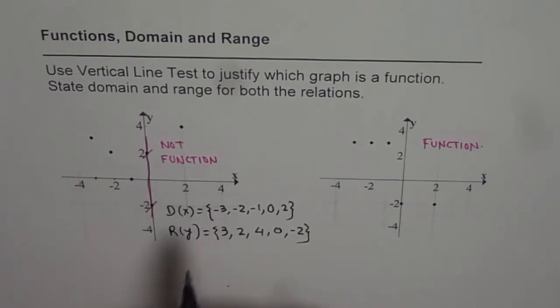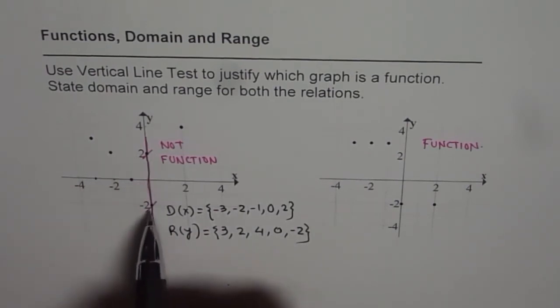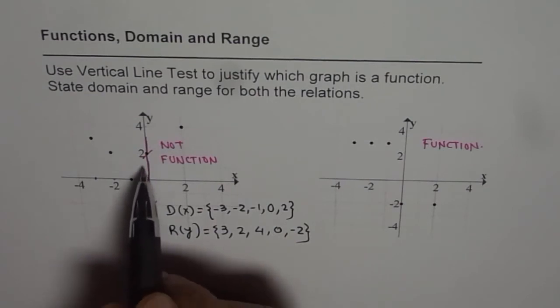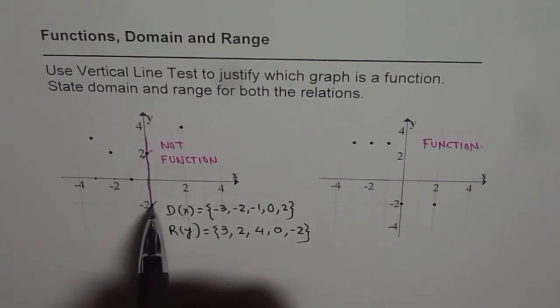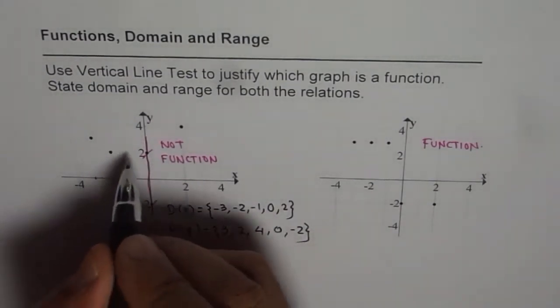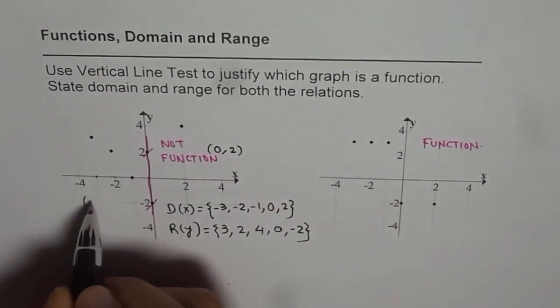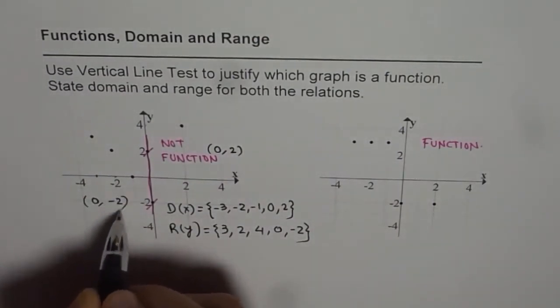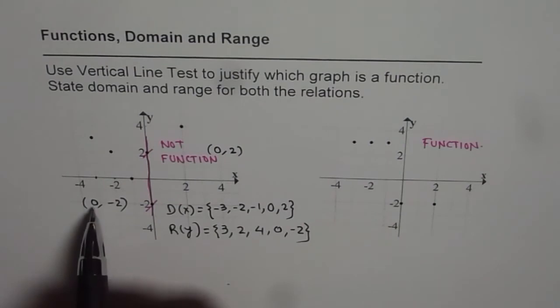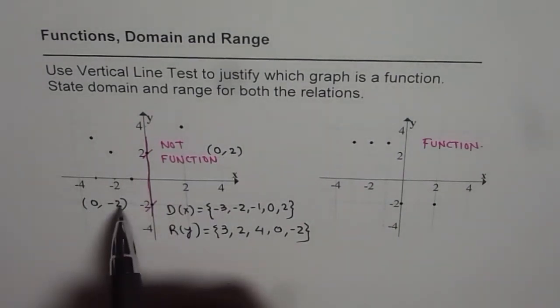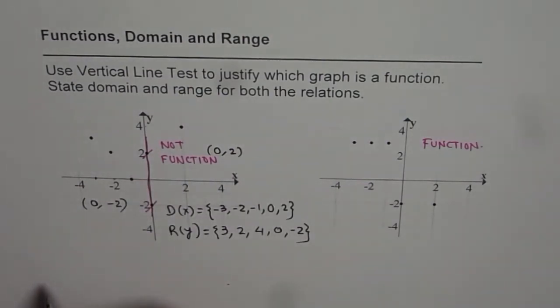But if I write the coordinate points, you will find that for zero, we have two values of y. That is to say we have this coordinate point as (0, 2), and then this one as (0, -2). So zero is associated with two elements in the range, two and minus two. And that is the reason why it is not a function.